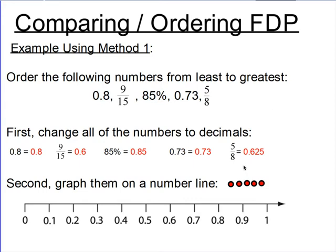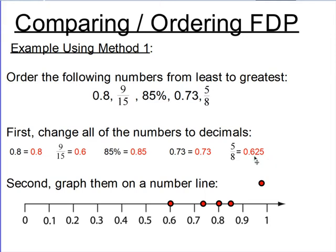Now let's put those numbers on a number line. I'm going to use each of these dots to represent one of the numbers. Eight tenths goes where eight tenths is on the number line. Six tenths goes where six tenths is on the number line. For eighty-five hundredths, you look at the tenths value to figure out about where it's going to be — it's going to be just past the eight tenths mark, and the five tells you it's going to be halfway between eight tenths and nine tenths. Seventy-three hundredths is going to go right after the seven tenths mark, but not quite halfway. And six hundred twenty-five thousandths will be just after six tenths, actually a quarter of the way from six tenths to seven tenths.